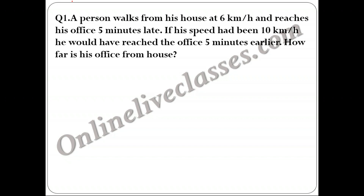In one case he is 5 minutes late and in the other case he is 5 minutes early. So the total time difference between the two cases is 10 minutes. To convert minutes to hours, divide by 60, giving us 10/60 hours.